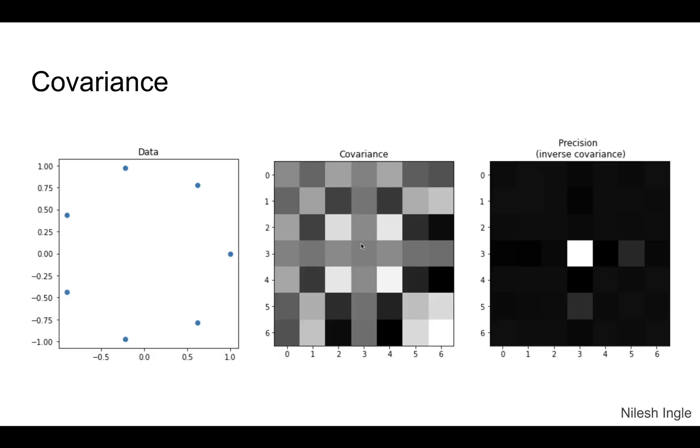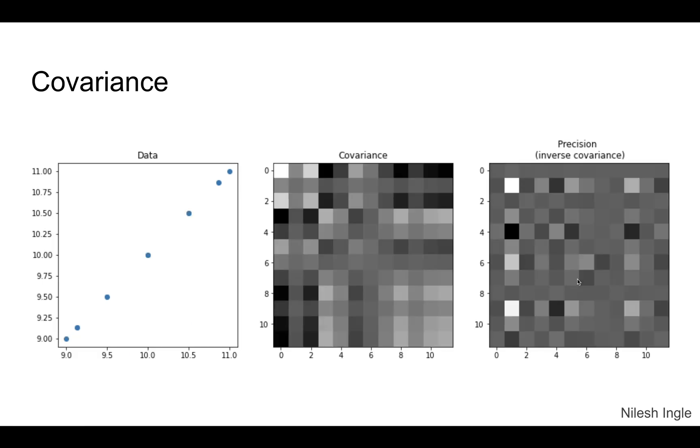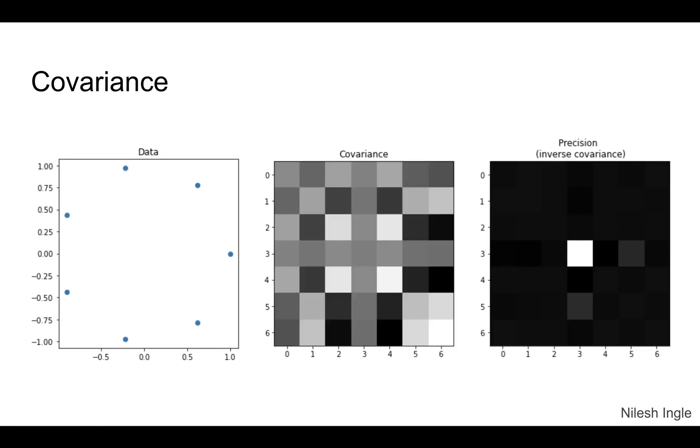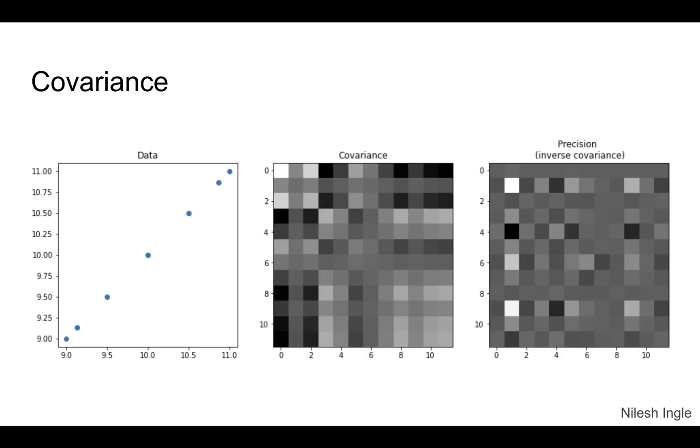Here is a visual example of how the heat map of the covariance matrix looks. We have the data here where the points are arranged in a circle, so we have this covariance matrix and this is the precision or inverse covariance. Here we have the covariance matrix for data points that are arranged in a straight line and here is the precision for that. Nothing specific to observe in here, but I just wanted to get you a visual feel of how covariance matrices may look like.